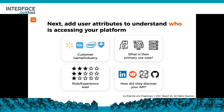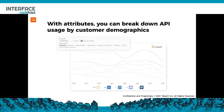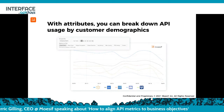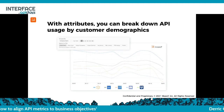First, we need to add some attributes to understand who is accessing your platform. If your platform is used by B2B companies or enterprises, you might add things like company name, industry, primary use case, and how they discovered you — was it through ads, sales activities, or other means? With those additional attributes, you can fully understand how to break this data down by company name, username, industry, and other ways.